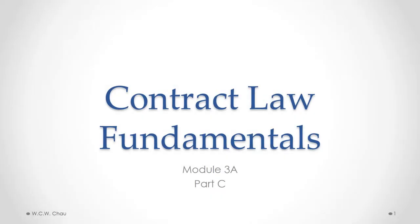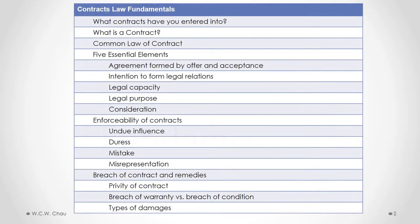This is Waylon Chow and welcome to Contract Law Fundamentals Module 3a Part C. In this part we'll look at the enforceability of contracts, which refers to specific contractual defects which may make a contract unenforceable, or in other words void or voidable. The defects that we'll look at are undue influence, duress, mistake, and misrepresentation.